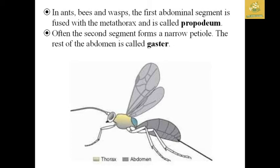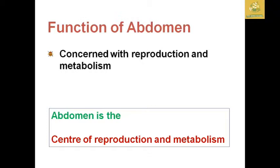In insects like ants, bees, and wasps, the first abdominal segment is fused to the metathorax, which is known as the propodeum, the second is the narrow petiole, and the rest of the abdomen is known as the gaster. The functions of the abdomen include reproduction and metabolic activity, so the abdomen can be called both the metabolic center and the reproduction center of the insect.